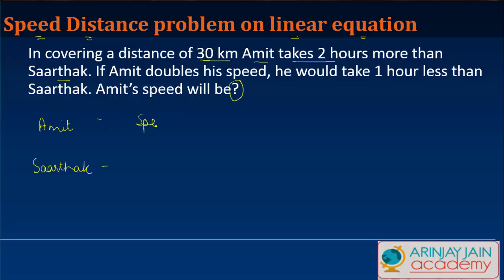There are two people: Amit and Sartak. Let Amit's speed be x kilometers per hour, and Sartak's speed be y kilometers per hour. We're told that Amit takes two hours more than Sartak to cover 30 kilometers.